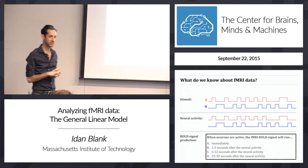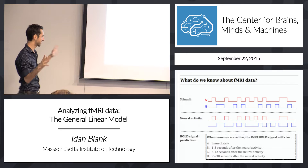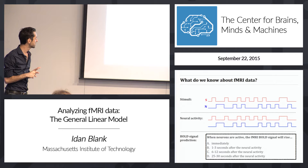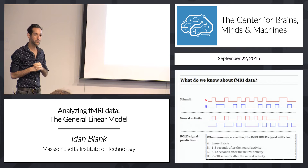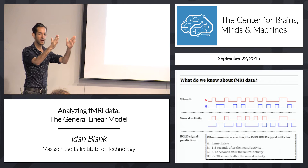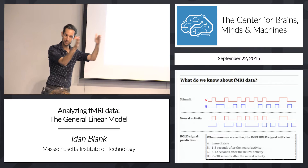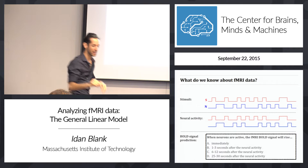But fMRI doesn't measure neural activity directly — it measures the BOLD signal. When neurons are active, the BOLD signal will rise, but the peak is usually around five to twelve seconds after the stimuli come up. So we were averaging the wrong points: we were averaging the time points when sentences were presented, but the time points where the language system actually responds are five to eight seconds later.